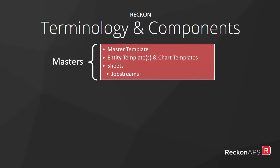Let us take a look at the main components and terminology. At the start of each financial year, RECON will supply you with an annual set of Masters. These Masters will include any of the following: a Master Template, some Entity Templates, and perhaps Chart Templates, and hundreds of Sheets. Those sheets within the templates are referenced by Job Streams, and Job Streams will be your Financial Reports.